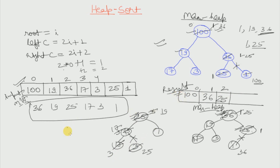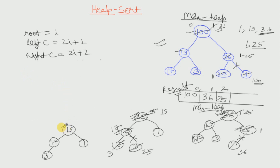The max heap structure now looks like: 19, 17, right child 1, and 3. If we again do the same operation, we pick out the largest element at the root. We replace it with the last element, 3 comes to the root, we unlink 19 and store it in our resultant array. Then we max heapify this 3.